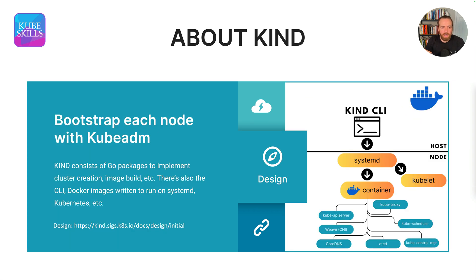The way that Kind works is that it bootstraps each node with KubeADM, and it consists of Go packages to implement cluster creation, image build, etc. There's nothing that you have to do manually — it boots up either a single node cluster or a multi-node cluster using the config that you can pass to it, giving you a fully running vanilla Kubernetes setup bootstrapped with KubeADM.